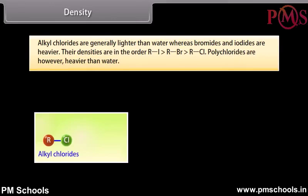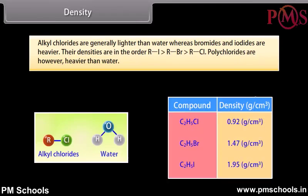Density: alkyl chlorides are generally lighter than water, whereas bromides and iodides are heavier. The densities are in the order RI > RBr > RCl. Polychlorides are, however, heavier than water.